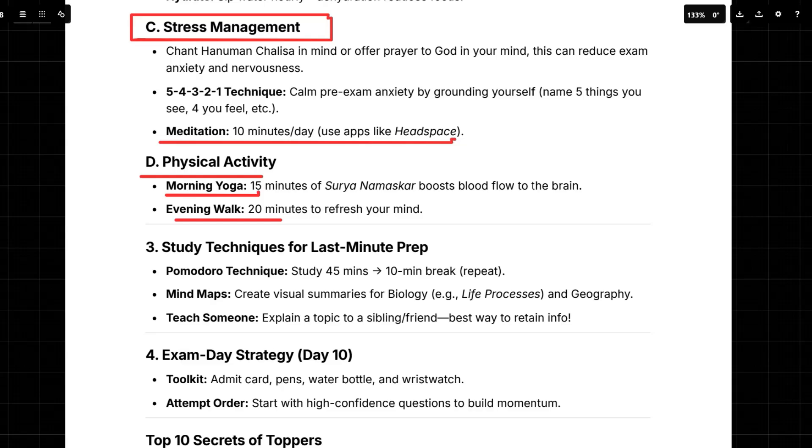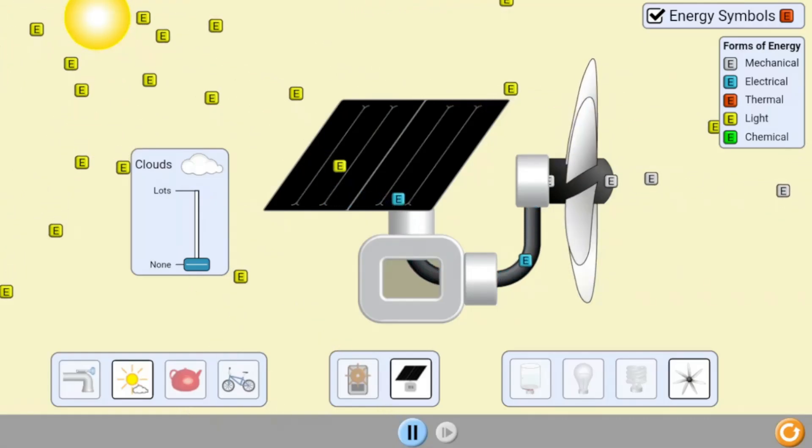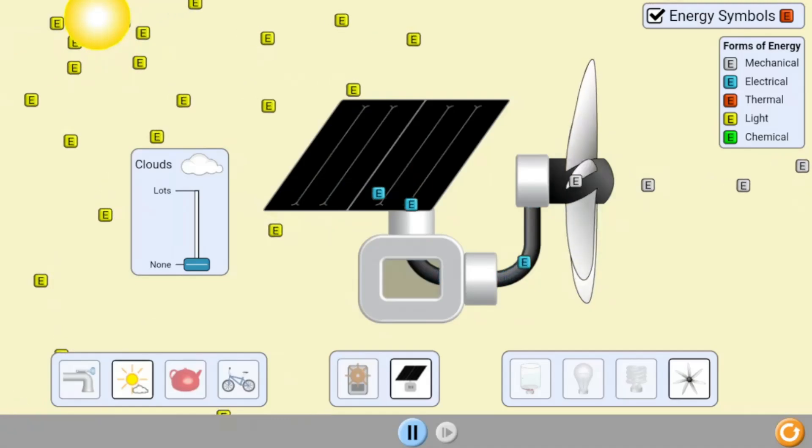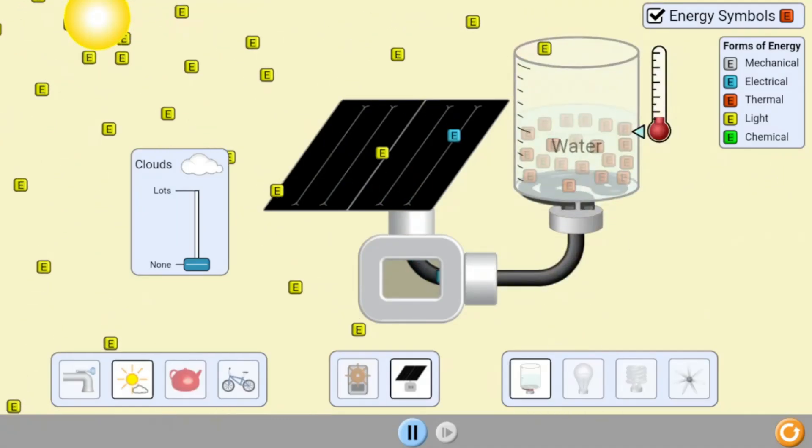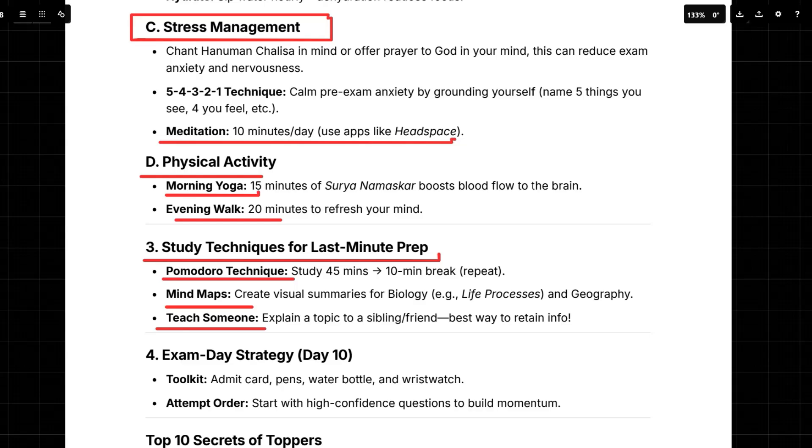So we've covered diet, stress, and confidence. Now back to the plan. Right, the next section talks about the study techniques you can use during the final prep. So the first one mentioned is the Pomodoro technique. That's where you study for 45 minutes and then you take a 10-minute break. It's a way to break up your study sessions and keep your brain fresh. And for visual learners, they recommend mind maps, which can be really useful. Especially for subjects like biology and geography. And then there's teaching, which is the best way to actually learn something.